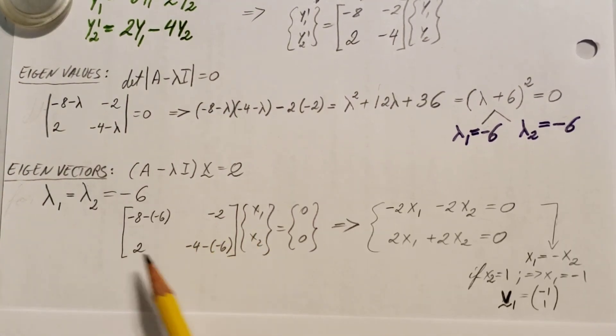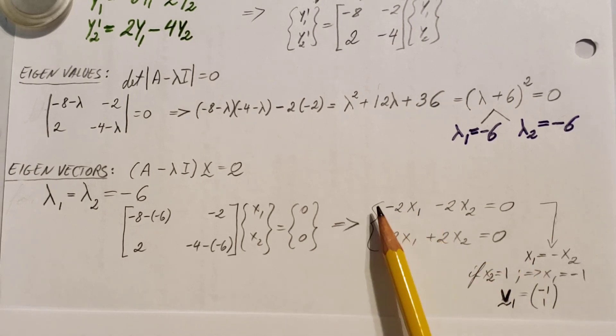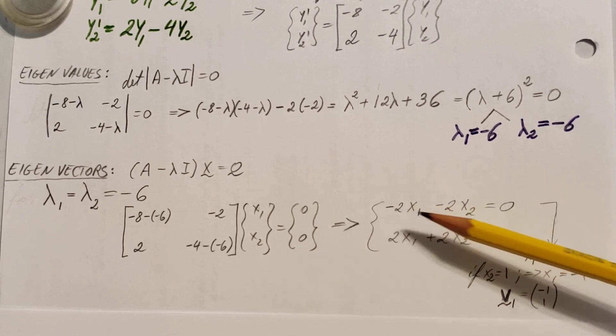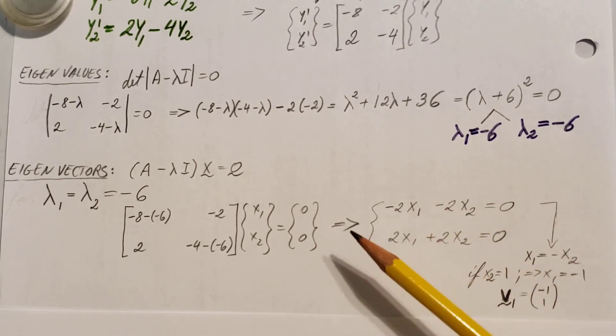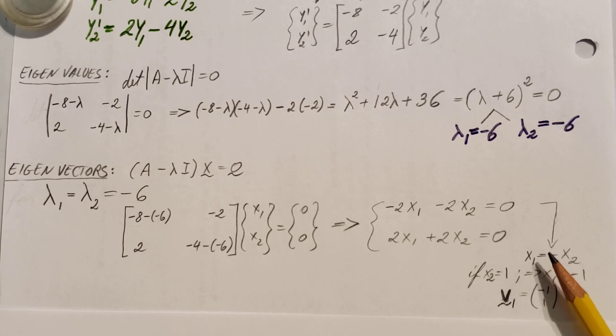Now if you work this out and turn it into equations, we can see that this equation is pretty much the same thing as this one. The only difference is a minus sign. So we're going to ignore one of them and use only one, and we can determine that x1 equals negative x2.